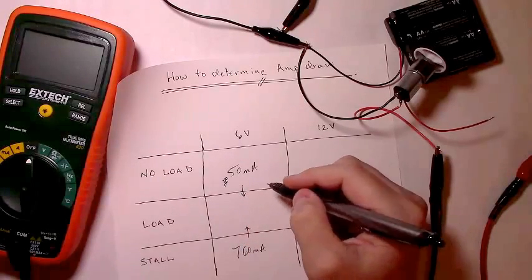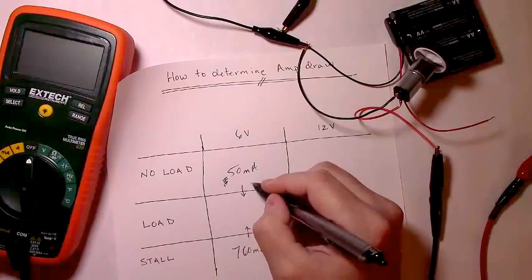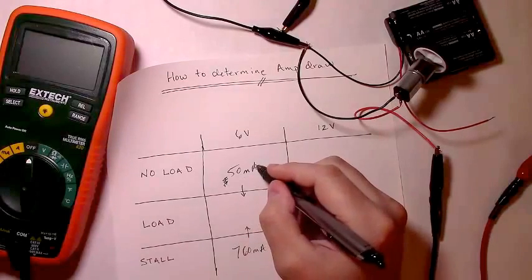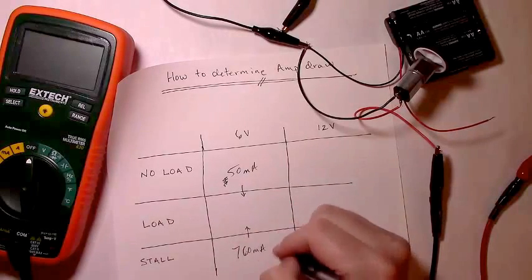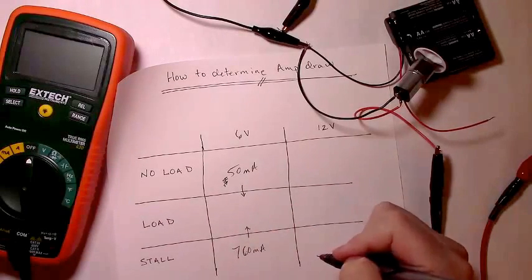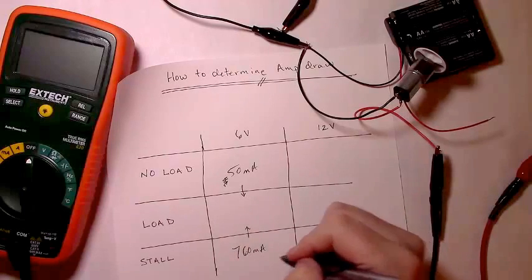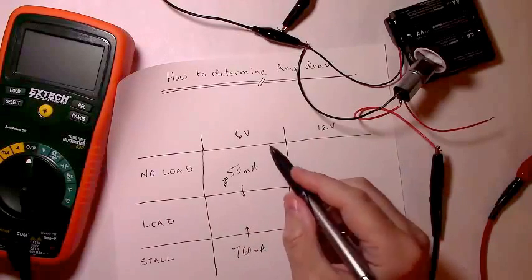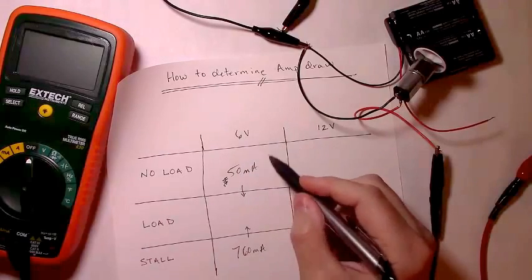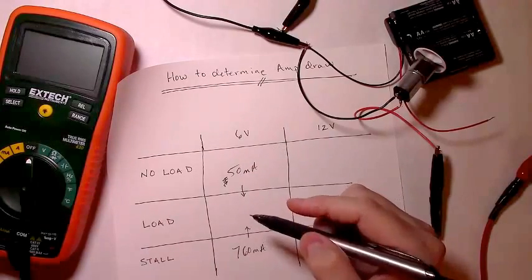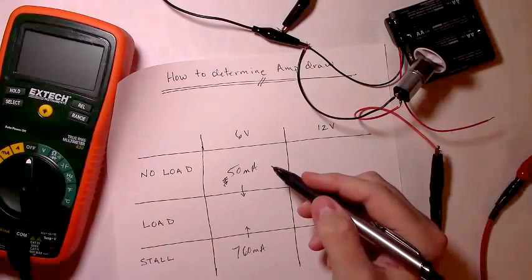And depending on if it's a lighter load, it'll be closer to that 50 milliamp range. If it's a heavier load, almost to the stall, you're going to be closer to this 760, 770 milliamps. So any motor driver, to be really safe, you could use a motor driver that can handle 1 amp in surges.